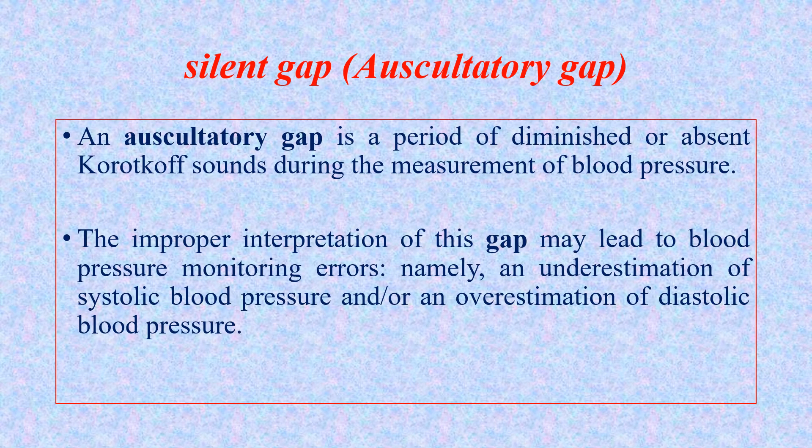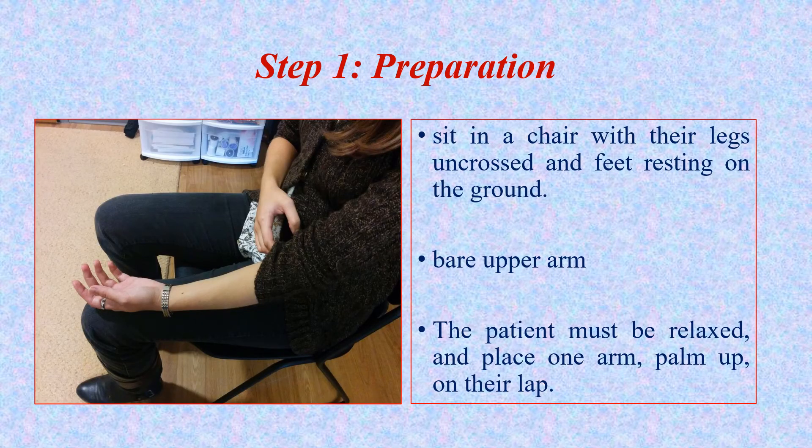We perform the palpatory method first to avoid the auscultatory gap. The auscultatory gap is a period of diminished or absent Korotkoff sounds during the measurement of blood pressure. The first Korotkoff sound gives the systolic reading; when the sound disappears, the fifth Korotkoff sound gives the diastolic blood pressure. Improper interpretation of this gap may lead to blood pressure measurement error — either underestimation of systolic blood pressure or overestimation of diastolic blood pressure.